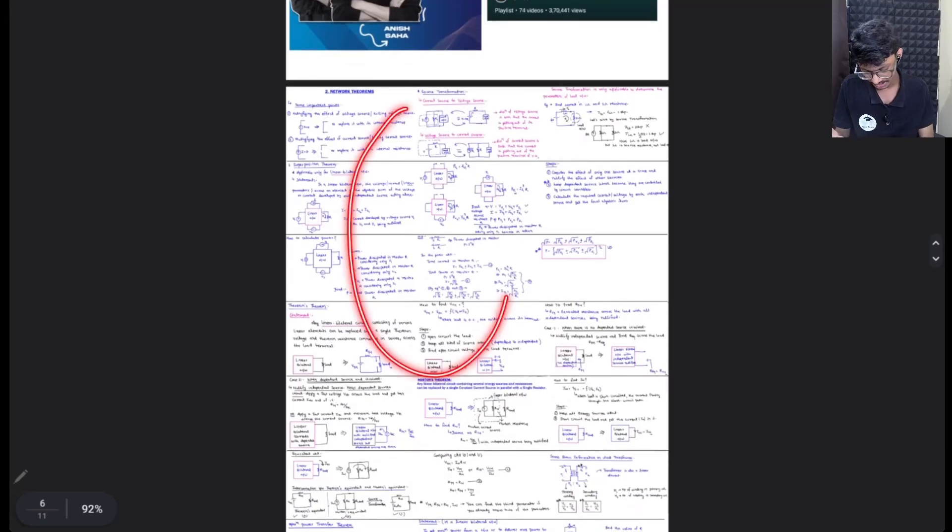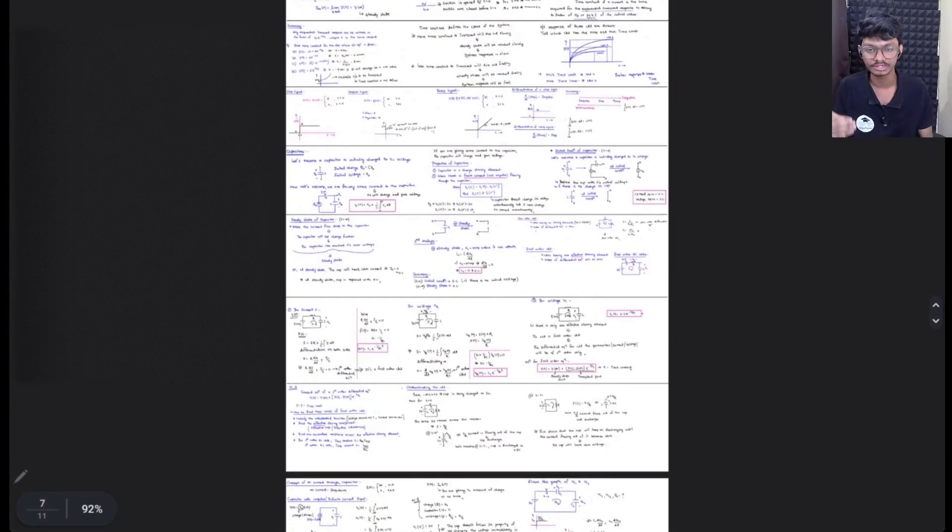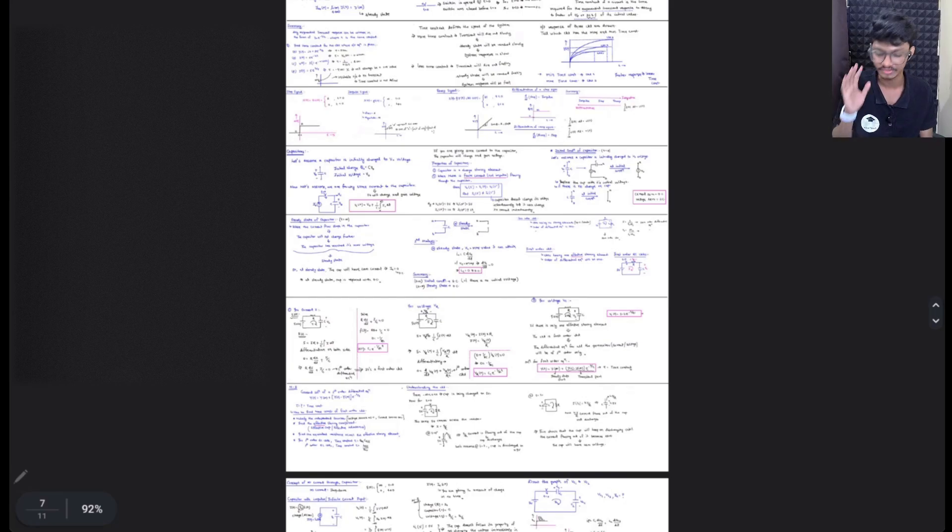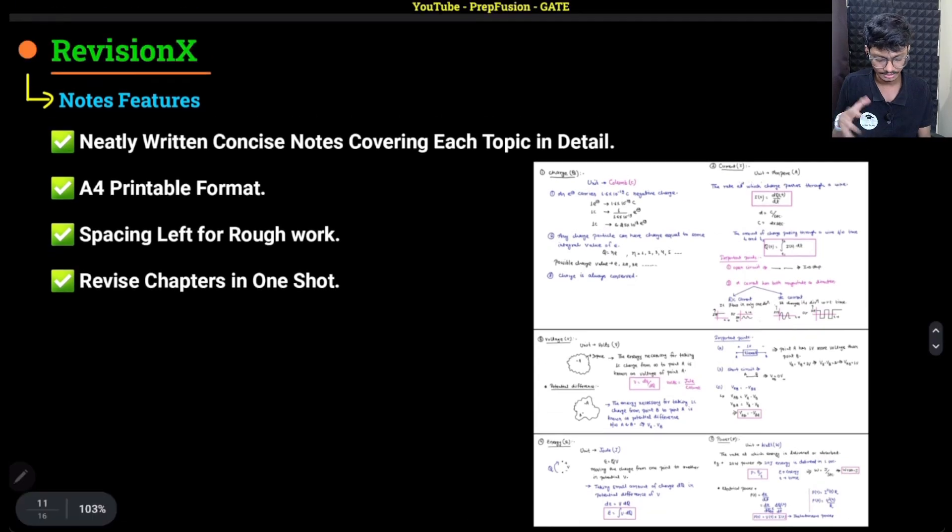Now again, next chapter Network theorem is there. Then the third chapter transit. So all this has been covered, these whole three chapters are covered in 11 pages. So it will not take too much time.